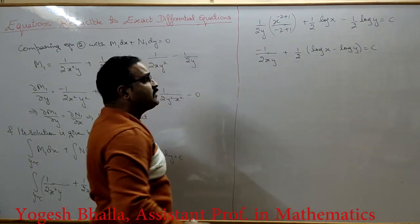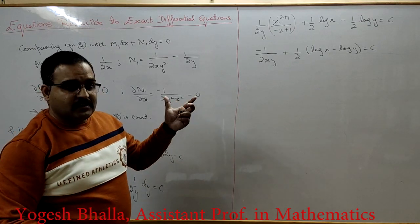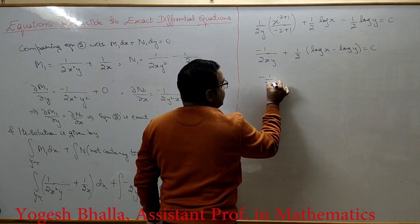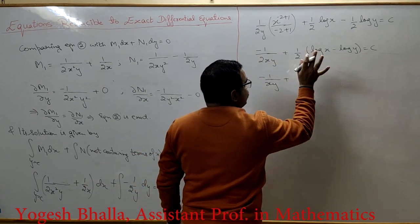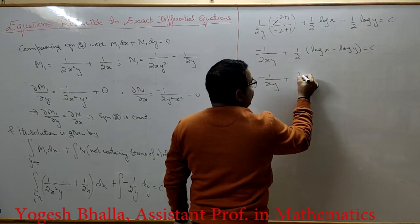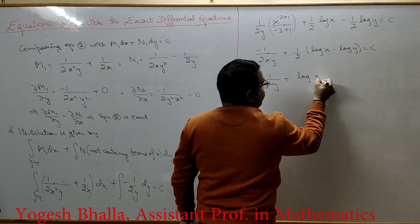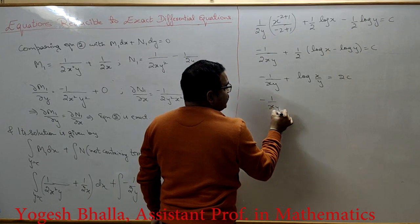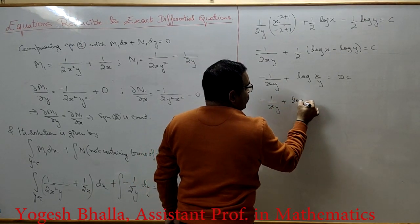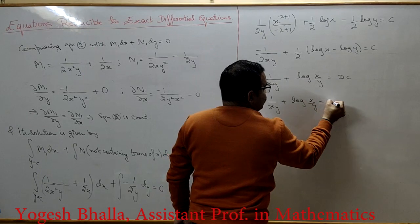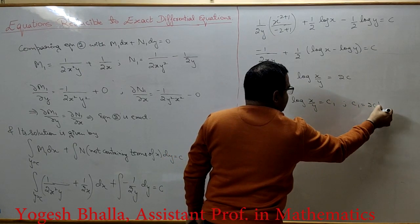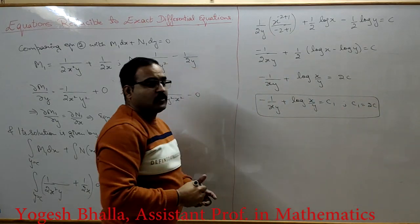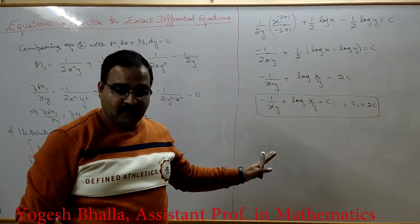Since 1/2 is present in every term, multiply through by 2: −1/(xy) + log x − log y = 2c. Using log(m/n) = log m − log n, this becomes −1/(xy) + log(x/y) = c1, where c1 = 2c. This is the solution of the given differential equation.